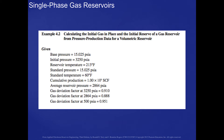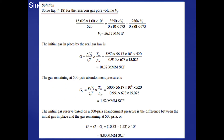The data given is shown on this slide. We're going to solve equation 4.18 for the reservoir gas pore volume. The initial gas in place, by the real gas law, is obtained by taking that pore volume and dividing by the formation volume factor. We have put in the factors for the formation volume factor and calculated a value for G.